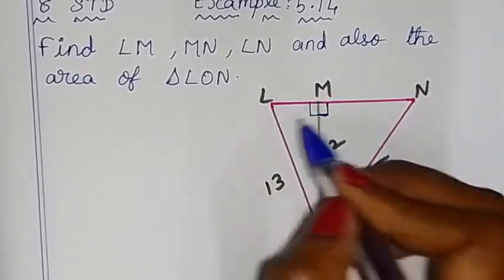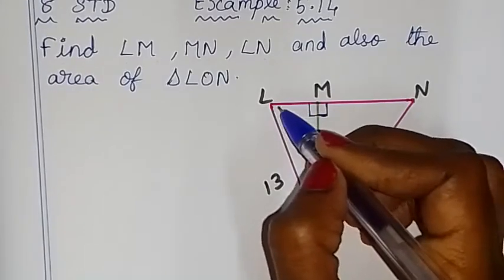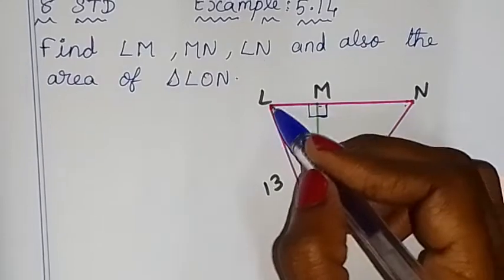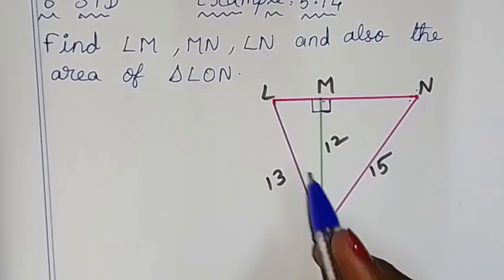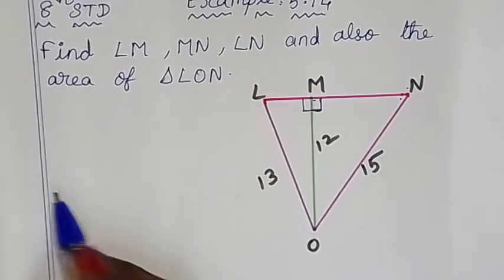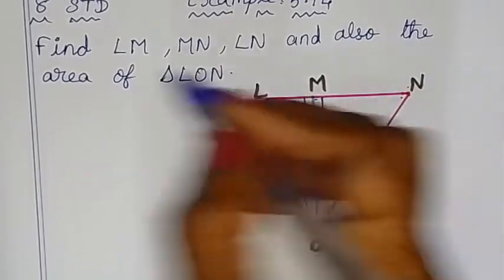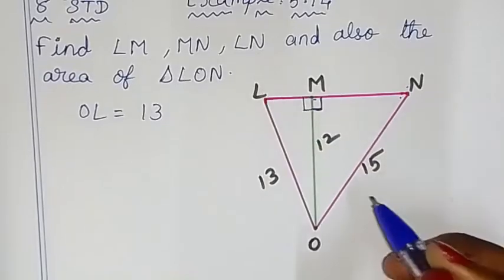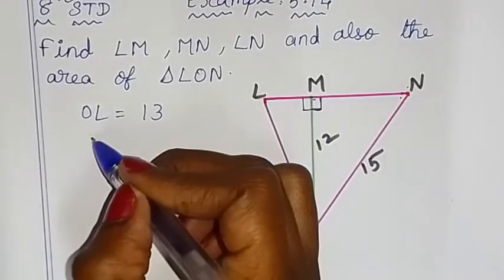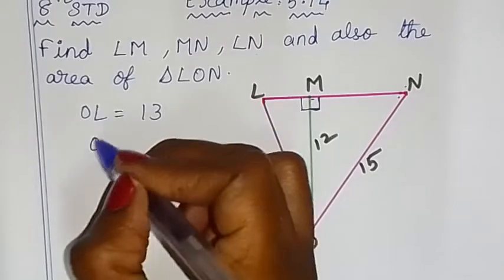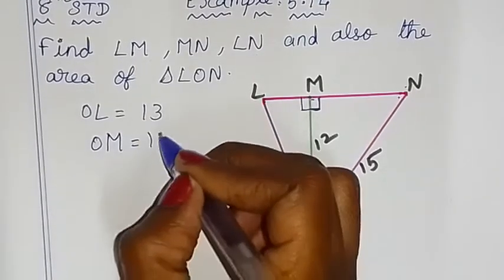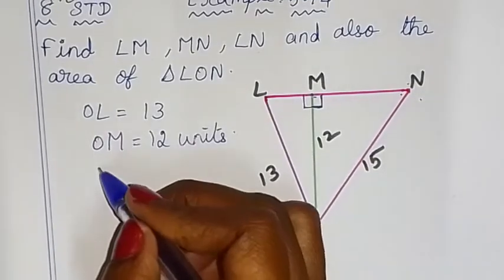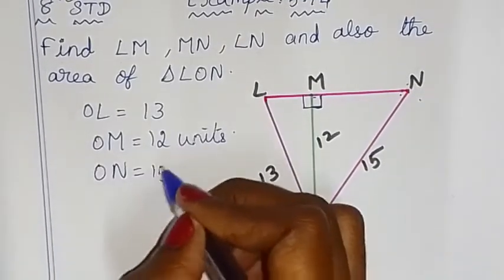Now we find the LN value. LM, MN, LN — LN is the total of LM plus MN. The given values are: OL is 13 units, OM is 12 units, and ON is 15 units.